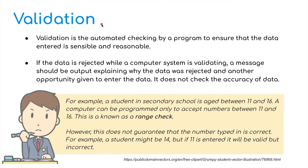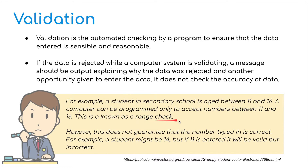Let's have a look at validation first. Validation is the automated checking by a program to ensure that the data entered is sensible and reasonable. If the data is rejected while a computer system is validating, a message should be output explaining why the data was rejected and other opportunities given to enter the data. It does not check the accuracy of the data. For example, students in secondary school are generally aged between 11 and 16. A computer can be programmed only to accept numbers between 11 and 16 — this is known as a range check. However, this does not guarantee that the number typed in is correct; this student might be 14, but if 11 is entered, it will be valid but incorrect.